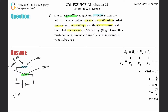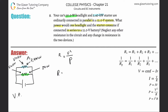The problem says to neglect any other resistance in the circuit and any change in resistance in the two devices, so let's calculate resistance. To relate power to voltage and resistance, I use P = V²/R, which rearranges to R = V²/P. For the blue resistor — the starter — that's 12 squared divided by 2400, which gives about 0.06 ohms.